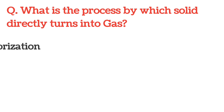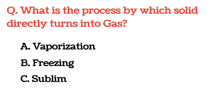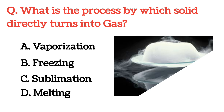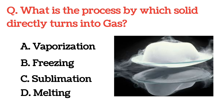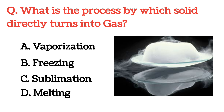What is the process by which a solid directly turns into gas? The correct answer is Option C: Sublimation.